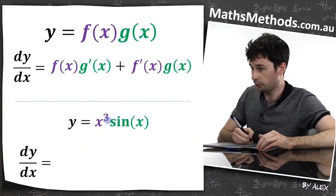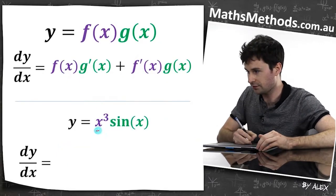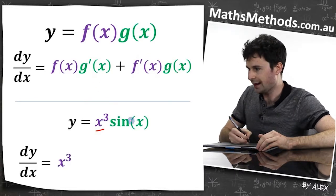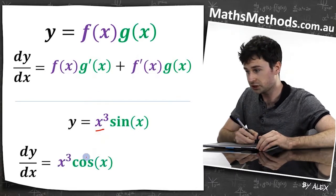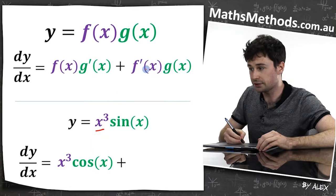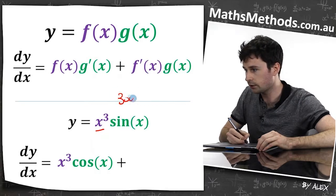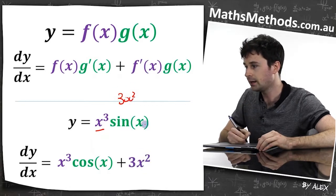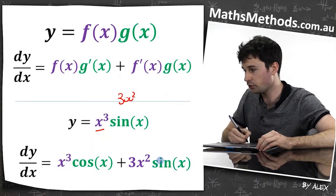So we've got something like this. First of all, we want to write f of x, so in this case f of x is just x cubed. G dash, the derivative of sine is just cos, so I chuck that down, plus f dash of x, which is three x squared, so we chuck that one down. And then g of x, which in this case is sine x.